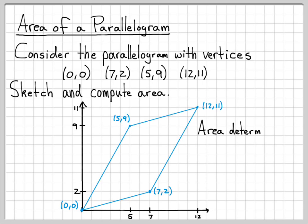The area of this parallelogram is really determined by just two vectors, the vector (5,9) and the vector (7,2). If I actually compute the determinant of the 2 by 2 matrix whose columns are these vectors, I will actually get the surface area. So what's the determinant of this?